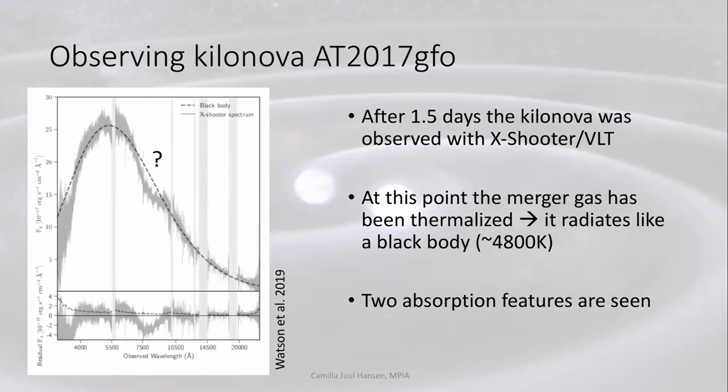We have various epochs of spectra observed after the event. What you see here is the first epoch made with X-shooter on the Very Large Telescope. This is taken about 1.5 days after the event. You can see at this point we have fitted a blackbody here in the dashed line to the observed spectrum in gray. The blackbody is actually quite a good match. This means that the gas at this point has been thermalized and that the radiation can be well described by a blackbody. This also means that local thermodynamic equilibrium is a fair approximation.